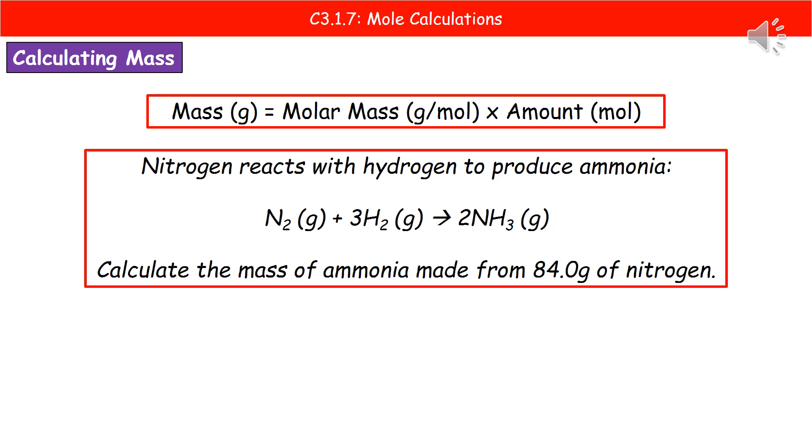The kind of question we could get is shown in the second box there. Nitrogen reacts with hydrogen to produce ammonia, and you've got the balanced symbol equation. Calculate the mass of ammonia made from 84 grams of nitrogen.